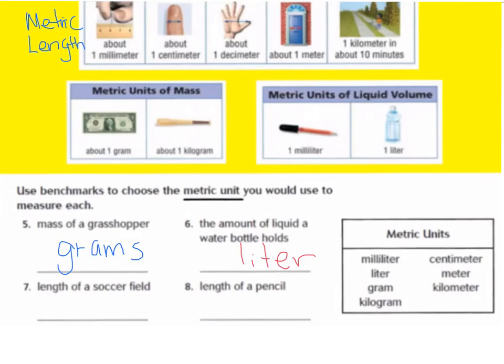Now I want you to look at numbers seven and eight. Think about which metric units we would use to measure the length of a soccer field or the length of a pencil. Go ahead, pause the video, write those answers in, and press play when you're ready. For the length of a soccer field, we would probably use a meter. For the length of a pencil, I would say we could use centimeters or decimeters — I'll take either one of those answers.